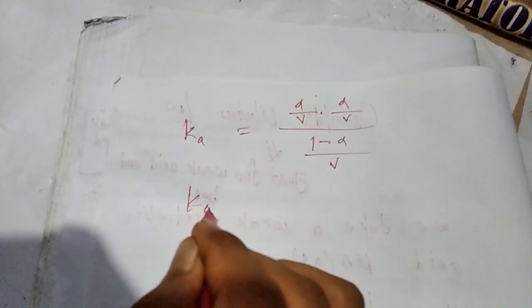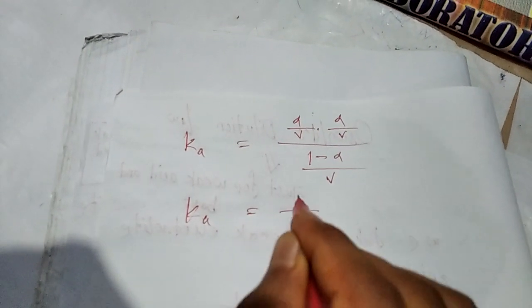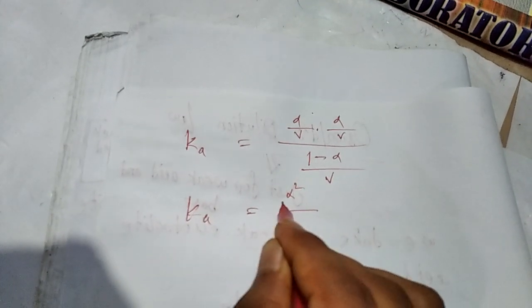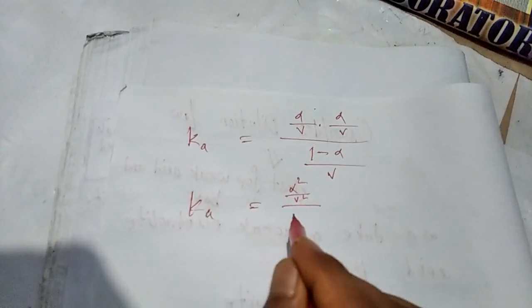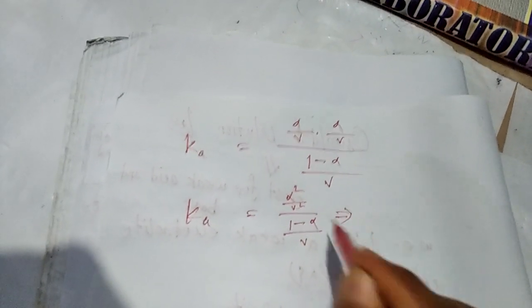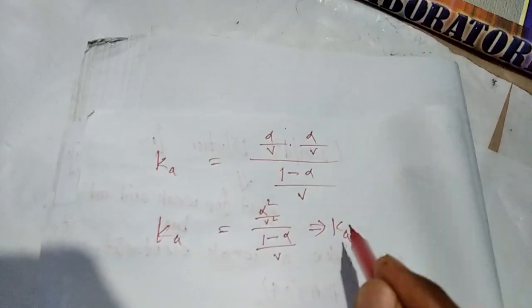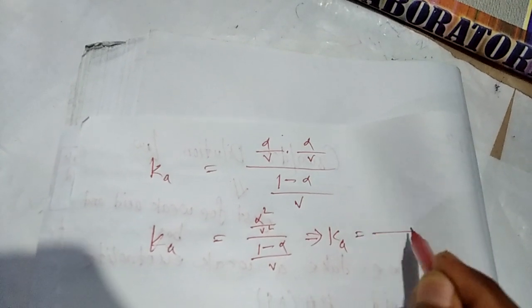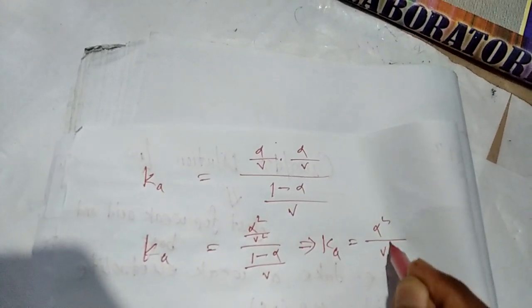Ka equals alpha squared divided by V squared, over (1 minus alpha) by V. Ka equals alpha squared over V squared times V over (1 minus alpha).